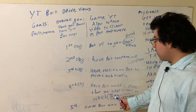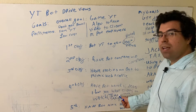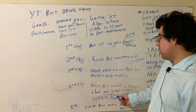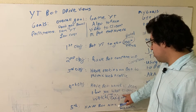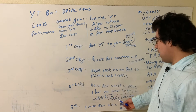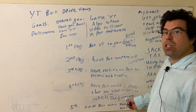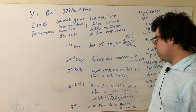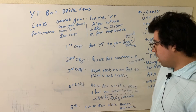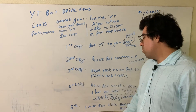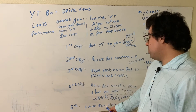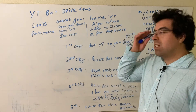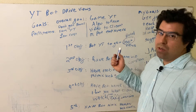For example, if targeting trading clients, maybe they'd go to market news or have tax questions — that's a high value client. Our fifth objective is to have the bot mimic human web traffic, so maybe it'll go to a TD Ameritrade account and then watch some YouTube videos.